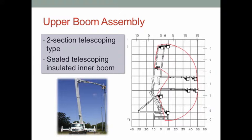The upper boom is a two-section telescoping type consisting of a sealed telescoping insulated inner boom. This platform provides articulation ranging up to 168 degrees relative to the lower boom.